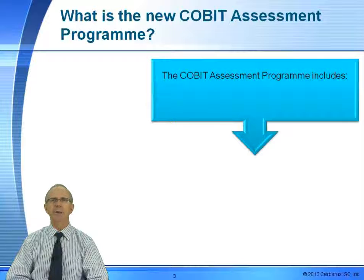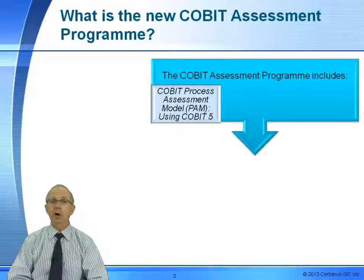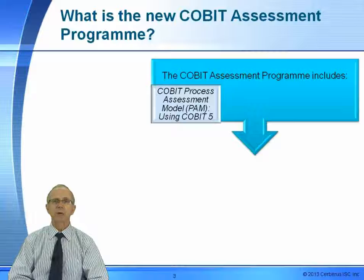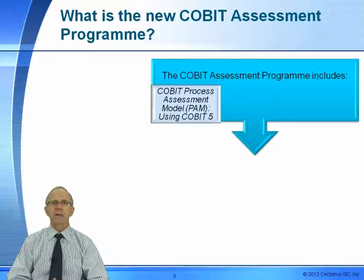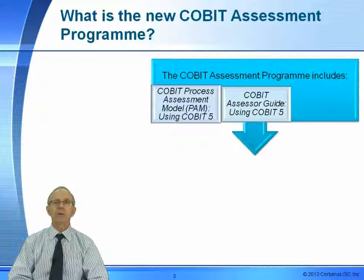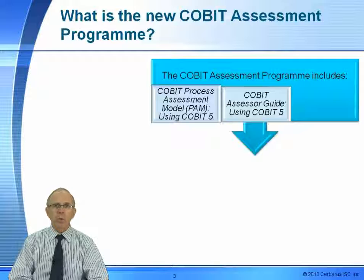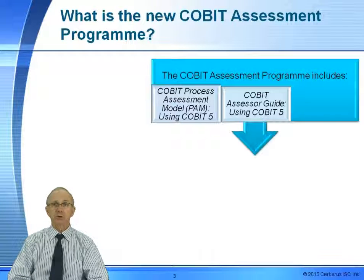So what is the new COBIT assessment program? It includes three distinct books. The first is the COBIT Process Assessment Model (PAM), using COBIT-5, though there is also a version using COBIT-4.1. Remember, you can do capability assessments regardless of which version of COBIT you happen to be using. The second is the COBIT Assessor Guide. As one of the co-developers of the assessor guide, I like that it clearly describes the seven steps you'll take to perform a proper, well-defined COBIT capability assessment — again, using COBIT-5 or COBIT-4.1.